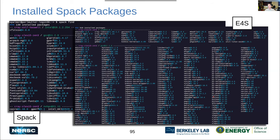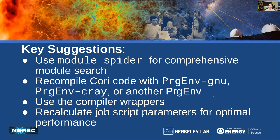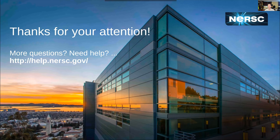Key suggestions for migrating from Cori to Perlmutter: use 'module spider' for a comprehensive module search; recompile your Cori codes on Perlmutter; start with the GNU programming environment, then try Cray or others; we highly recommend using the compiler wrappers because they do so much behind the scenes; and go back over your job scripts to recalculate the parameters for good performance. Thank you for your attention.